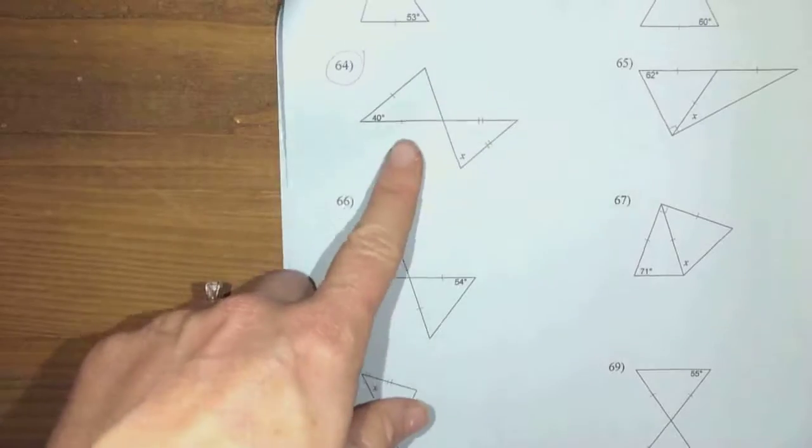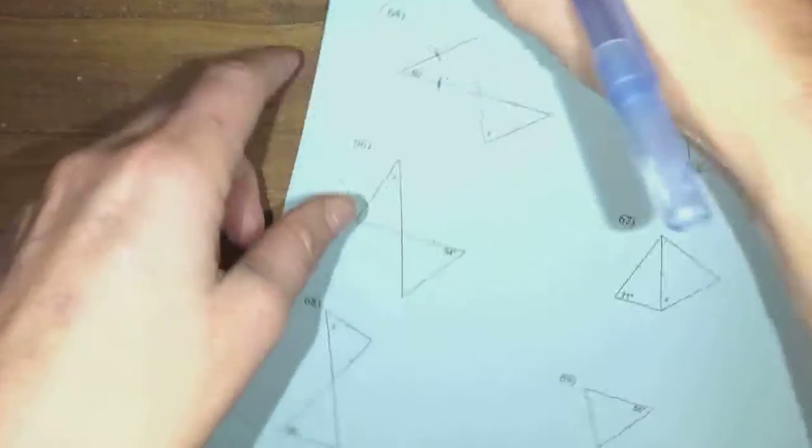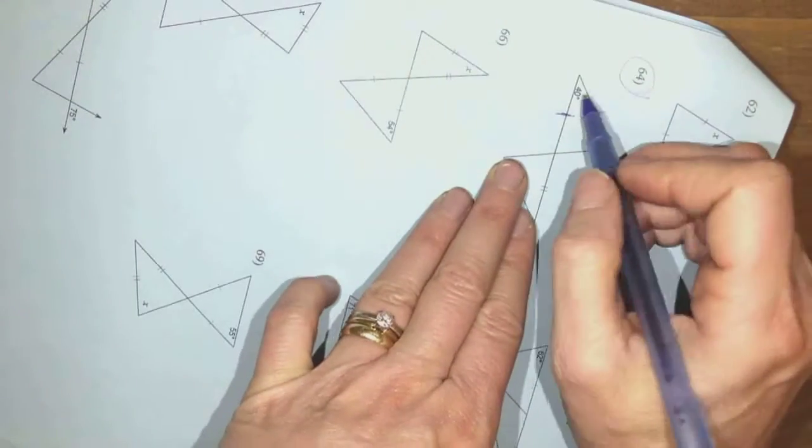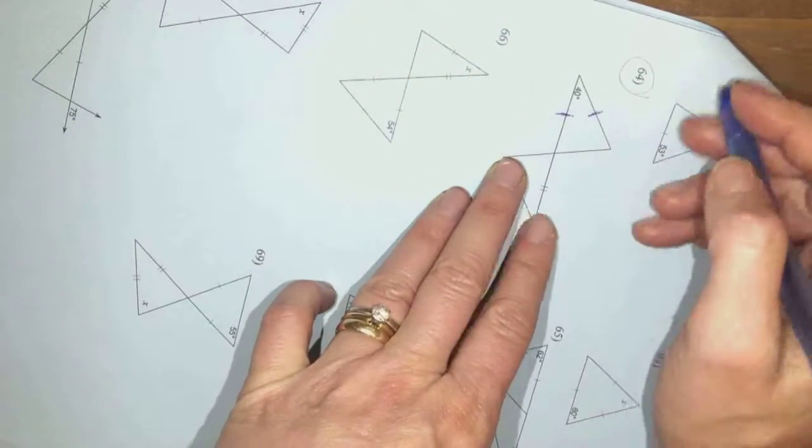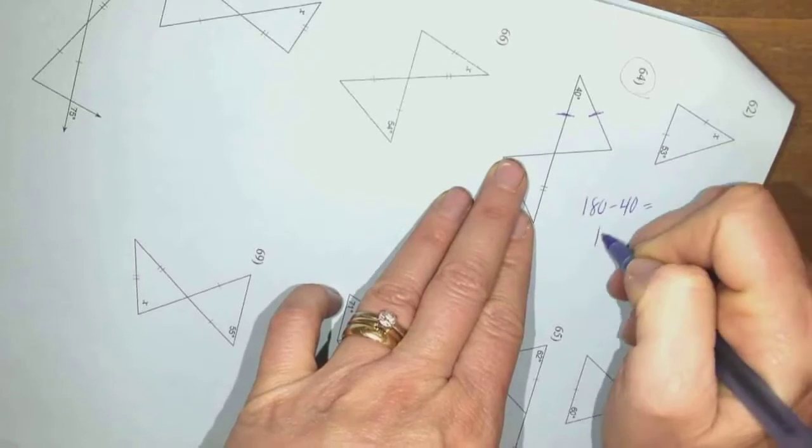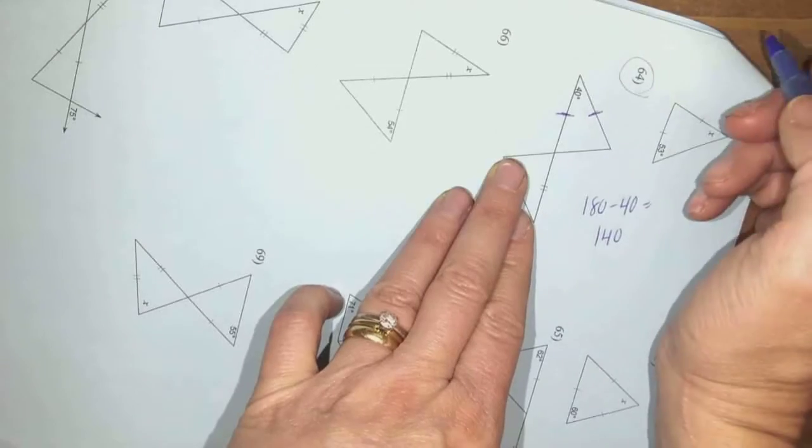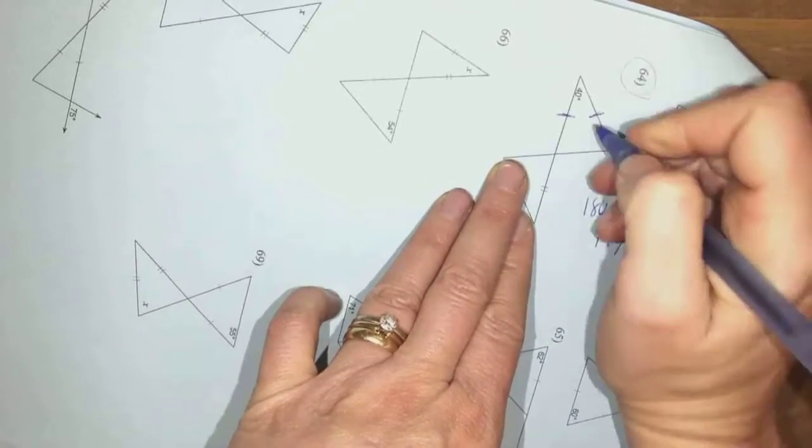So let's look at 64. I'm looking at 64. I see that I have an isosceles triangle here. I'm going to turn it. This is my vertex angle at the top. So if I have 180 minus 40, that gives me 140 degrees left to split between these two equally because they need to be equal. So divide that by two. These are both 70.